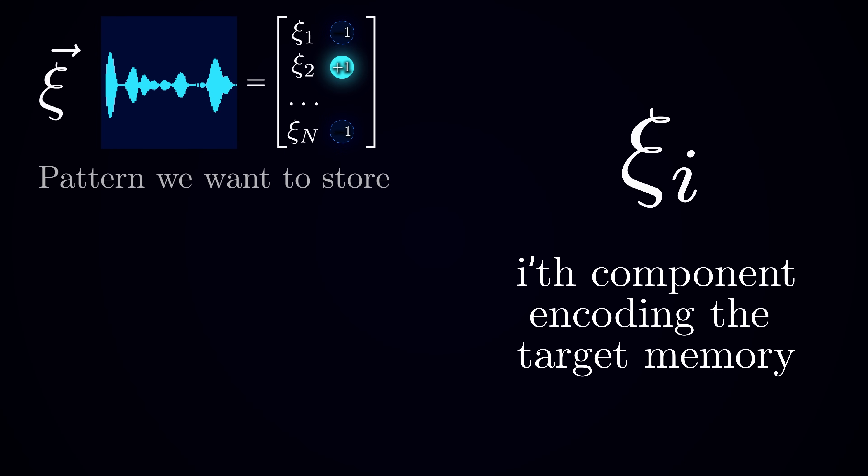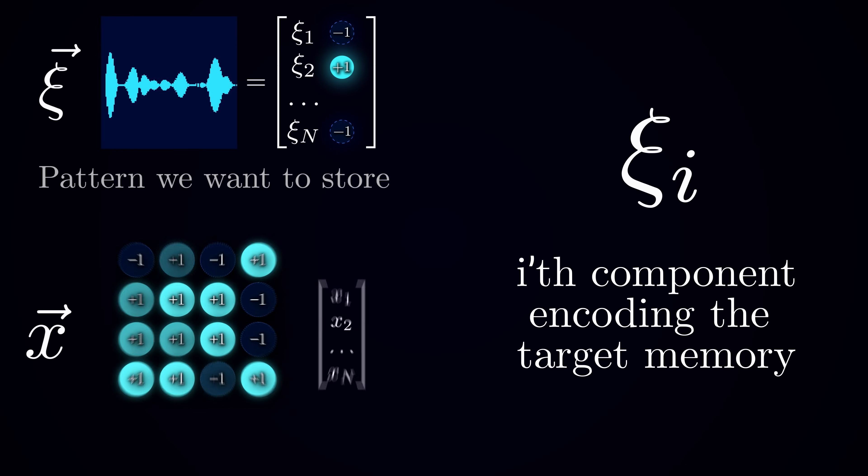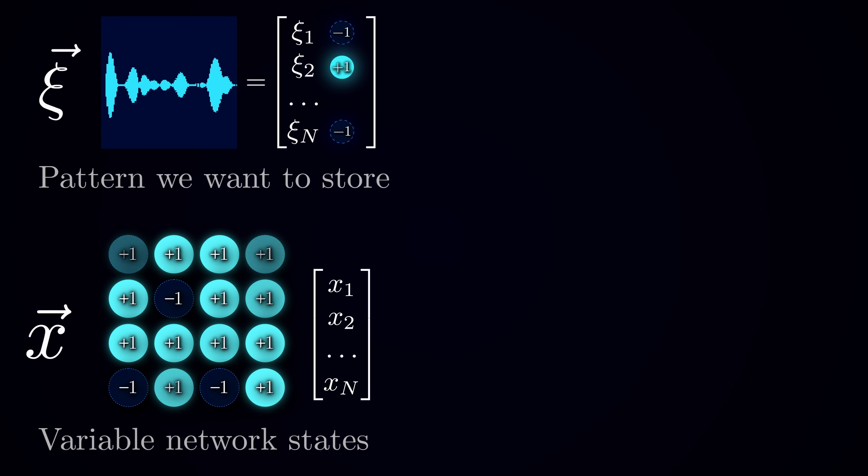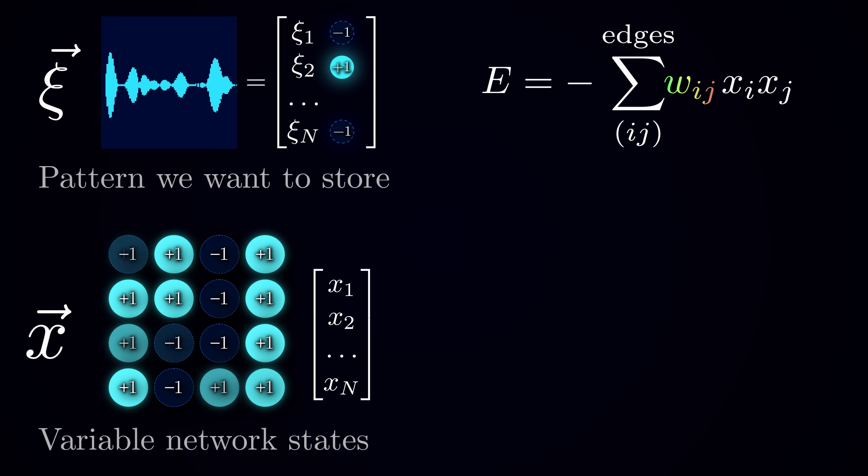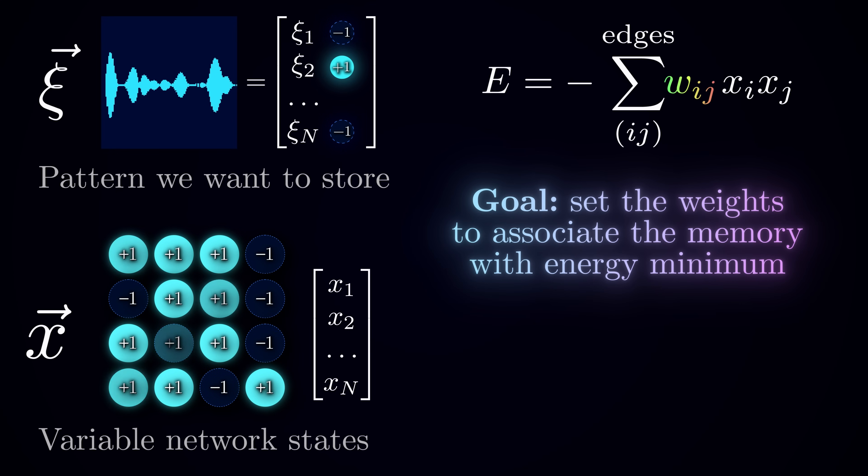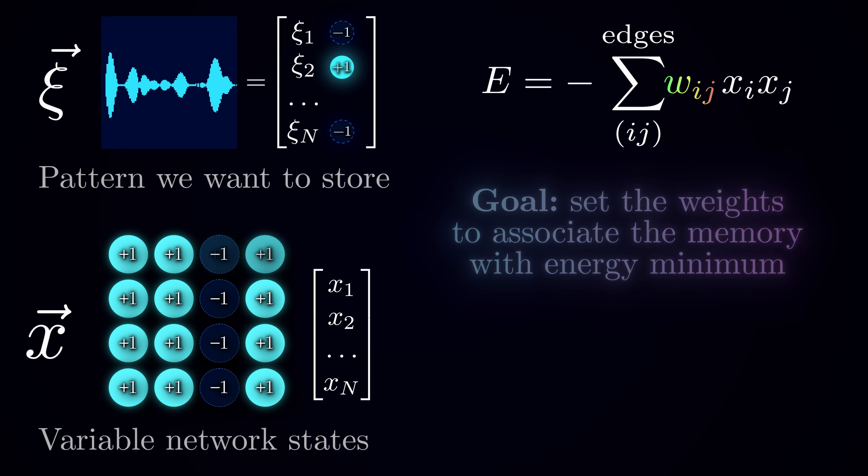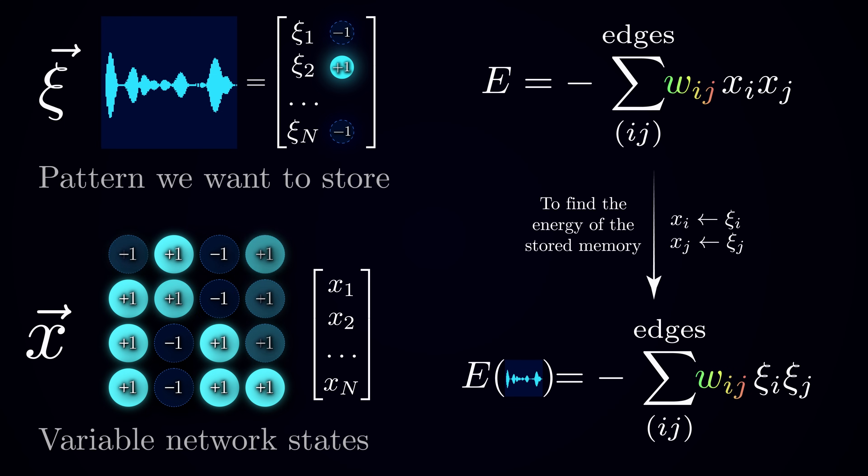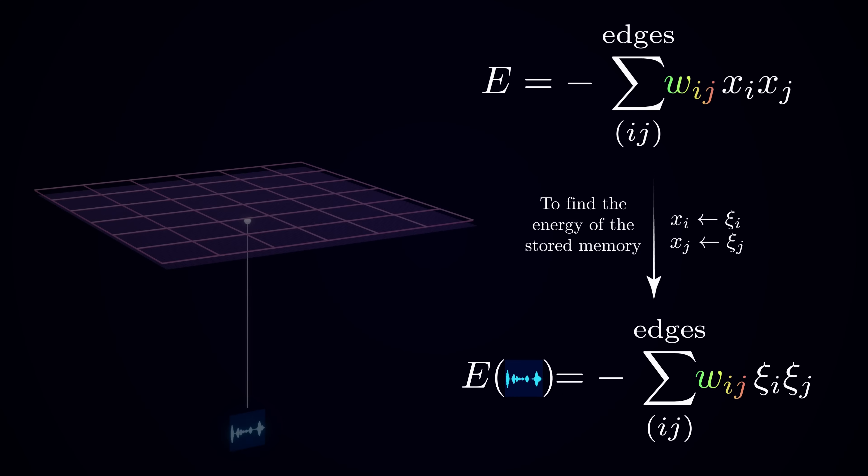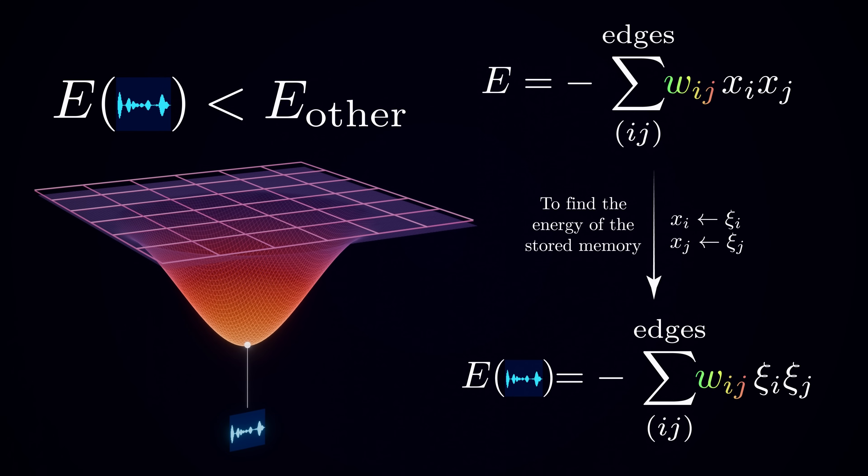Let's denote the template pattern that we'd like to store as Xi, which is a vector packing the states of all neurons. And Xi will denote the ith component, the state of ith neuron encoding the memory, while xi refers to the state of ith neuron in the network in general, which could be tweaked. Revisiting our definition of energy, we want to set wij so that this quantity would be at its minimal value for the memory pattern. If we plug Xi equal to Xi, we get the equation for the energy of the reference pattern as a function of weights, which we want to turn into a global minimum.